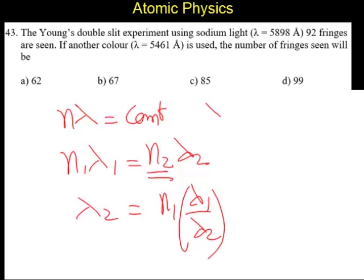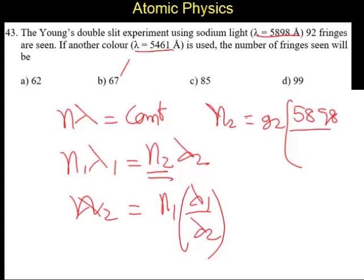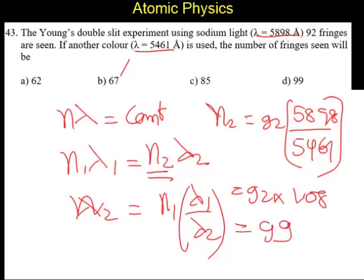n2 equal to n1 is given as 92 into lambda 1 is 5898 by lambda 2, 5461. It is going to be 92 into 1.08, which is around 99. 99 fringes can be seen if the color of wavelength has been changed. Answer is D, 99.